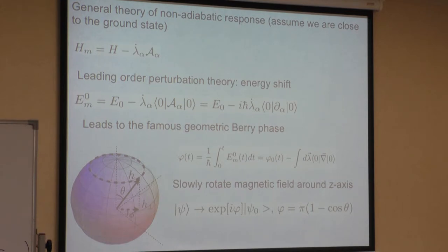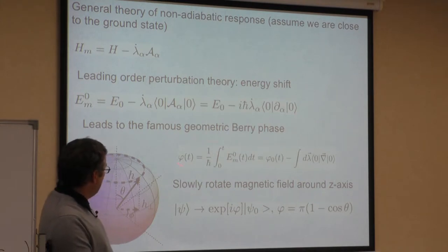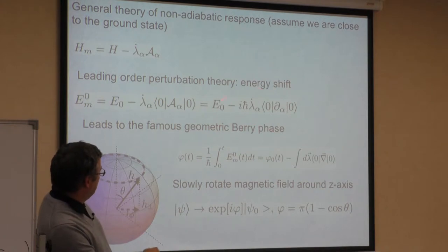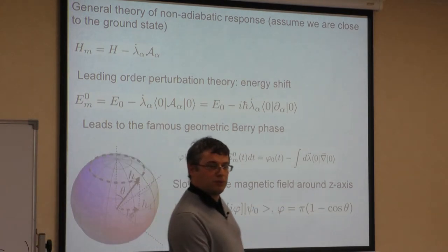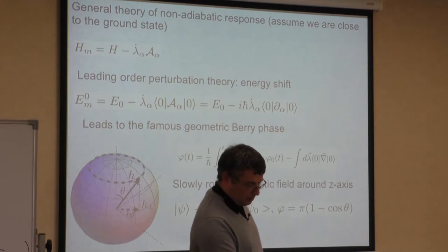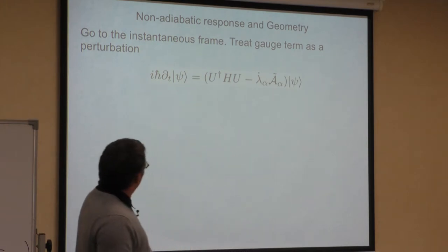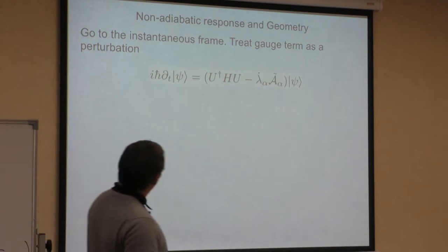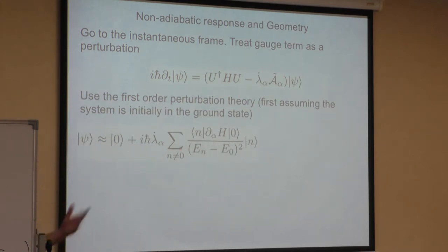Let me try to go beyond first-order perturbation theory. I am using static perturbation theory, assuming this is both small and slowly changing, and I'll also show the full derivation using time-dependent perturbation theory giving the same results. The perturbation is minus A times lambda-dot, so my correction to the wave function psi_1 will be a sum over n not equal to 0 of matrix elements divided by energy denominators.